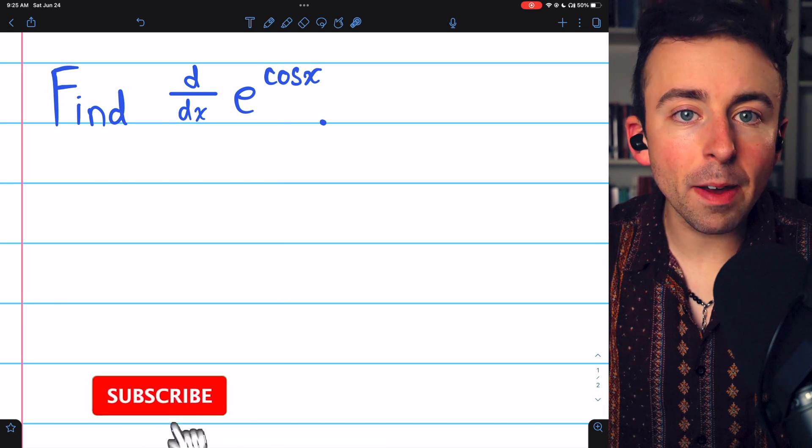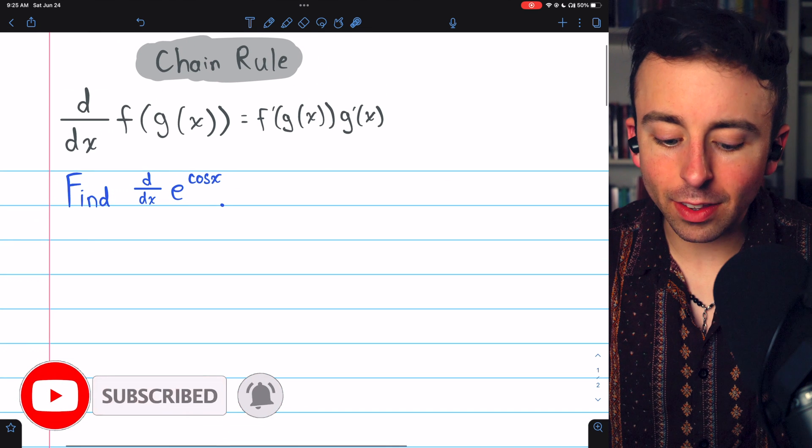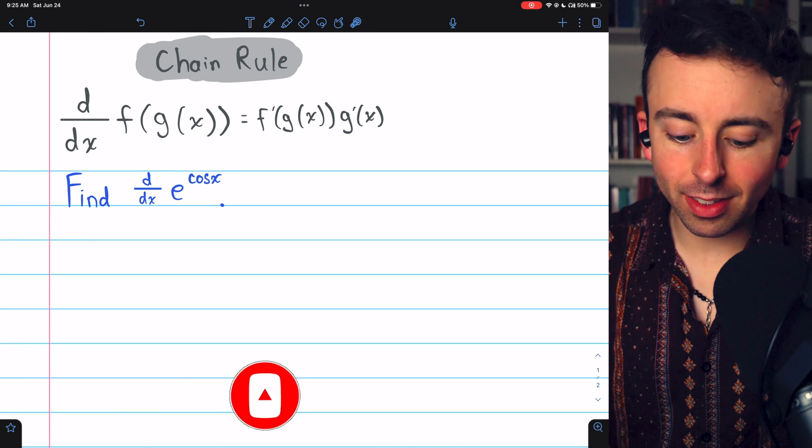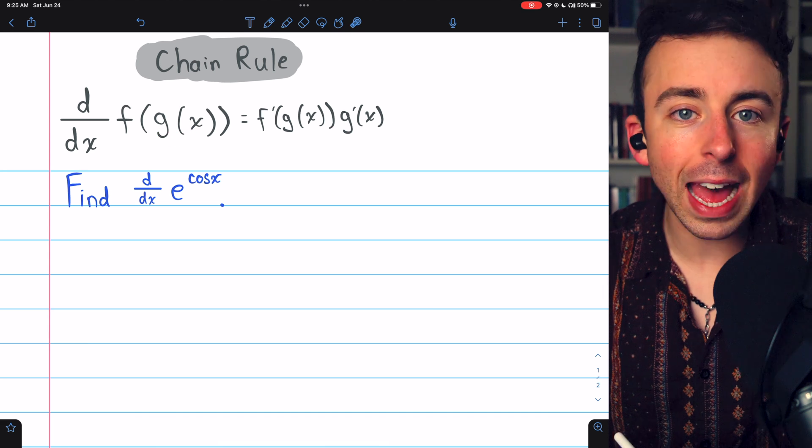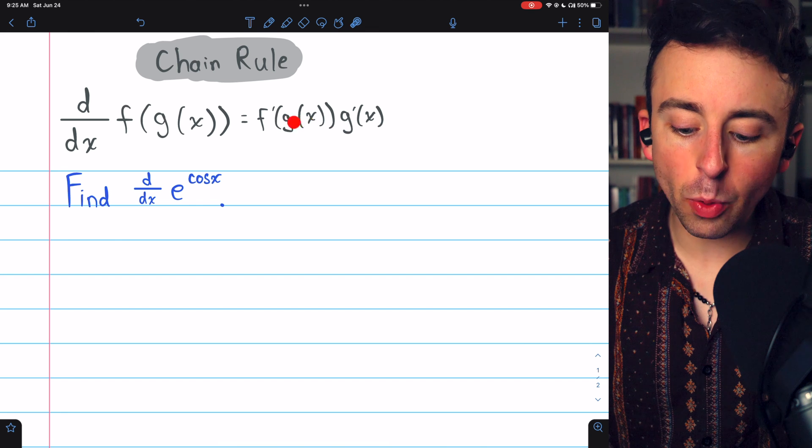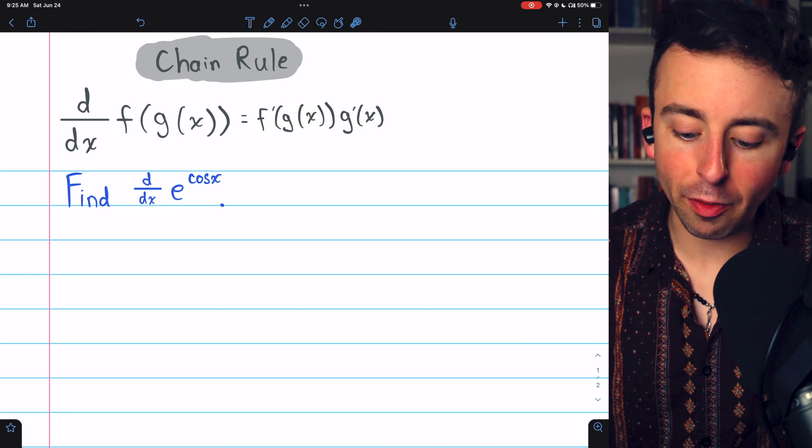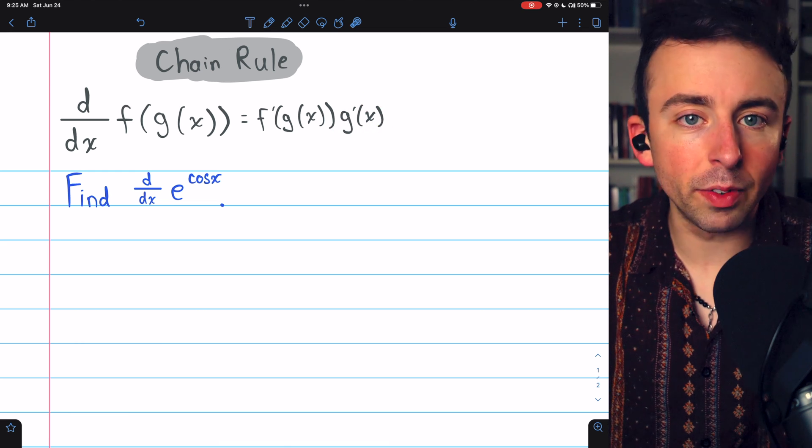e to the cosine x is a composite function. So to take its derivative, we're going to need the chain rule, which tells us the derivative of a composite function f of g of x is f prime, the derivative of the outside function, evaluated at the inside function, so f prime of g of x, multiplied by g prime, the derivative of the inside.